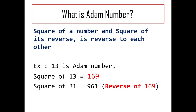For example, I have given 13. The square of 13 is 169. Then we reverse 13, which is 31. The square of 31 is 961. So 169 and 961 are reversed to each other. If this is the case, then 13 is said to be an atom number — the square of a number and the square of its reverse are reversed to each other.